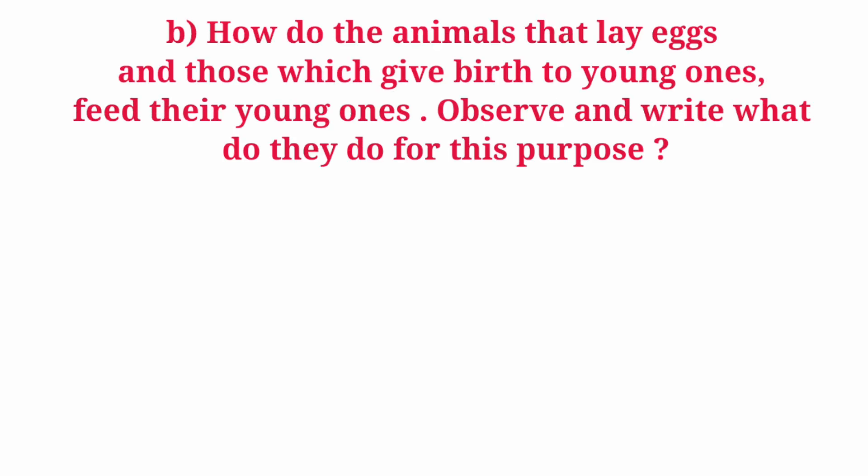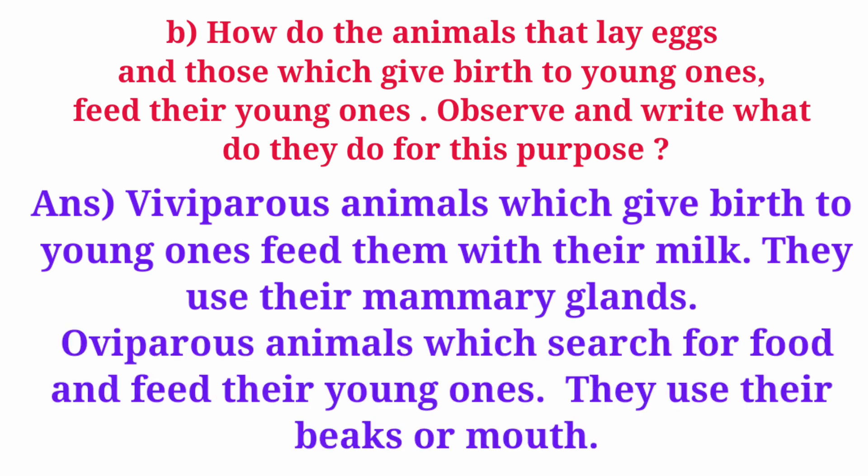Question B: How do the animals that lay eggs and those which give birth to young ones feed their young ones? Observe and write what do they do for this purpose? Answer: Viviparous animals which give birth to young ones feed them with their milk. They use their mammary glands. Oviparous animals search for food and feed their young ones. They use their beaks or mouth.